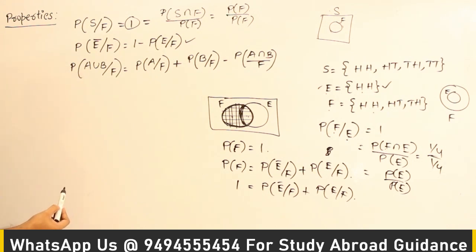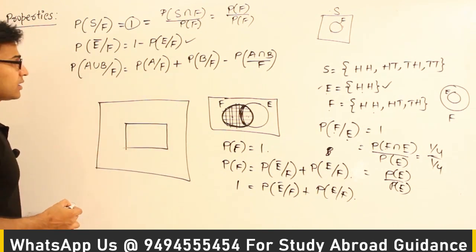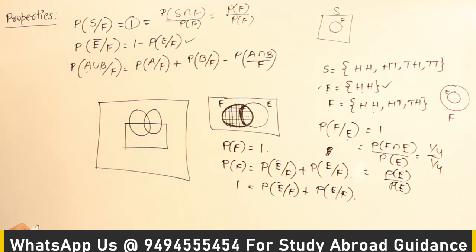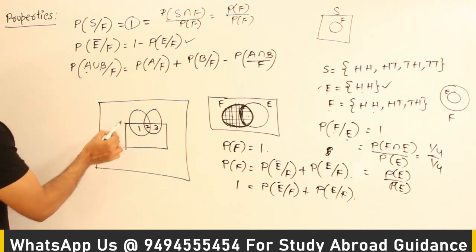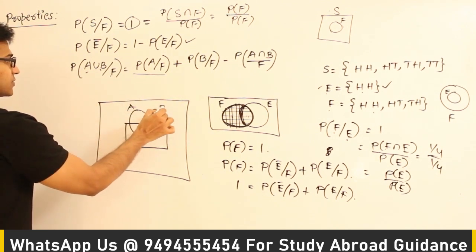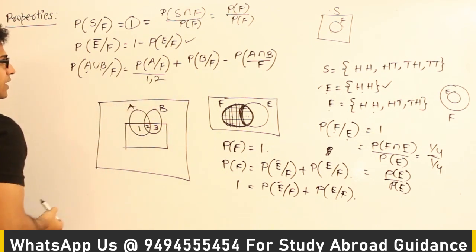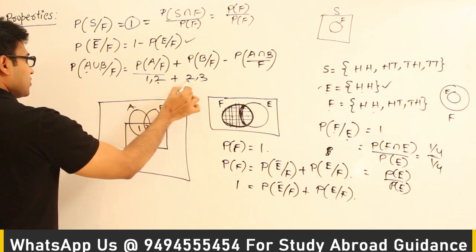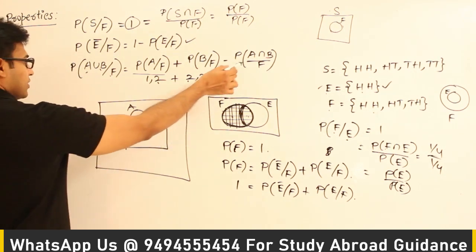Let us say F is an event which has already occurred — this is the sample space, F has occurred, and we have two events A and B. They are asking what is P of A union B given F, which means they are asking about the combined region covering parts 1, 2, and 3. We can write it as P of A given F — which covers parts 1 and 2 — plus P of B given F — which covers parts 2 and 3. But part 2 has been added twice, so we subtract P of A intersection B given F.